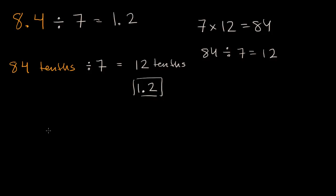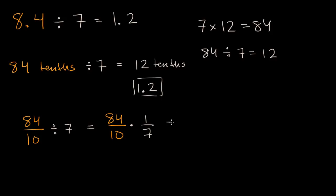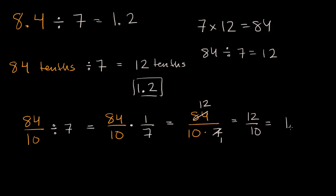Another way we could have thought about this: 84 tenths is the same thing as 84 over 10. And now you want to divide this by seven. When you divide by something, it's the same as multiplying by the reciprocal. So it's 84 over 10 times one seventh, which equals 84 over 10 times seven. Dividing numerator and denominator by seven: 84 divided by seven is 12, and seven divided by seven is one. So 12 divided by 10 is 12 tenths, which is 1.2.